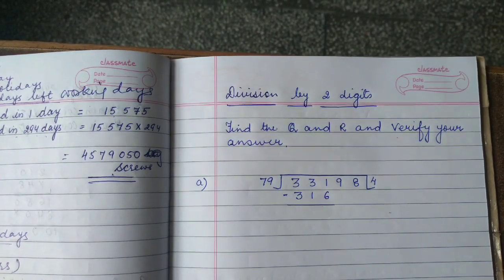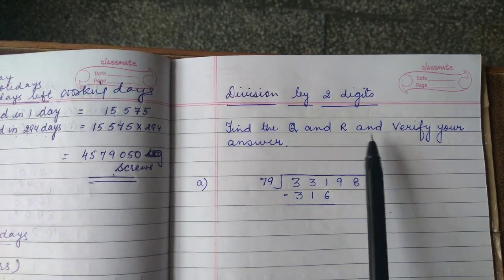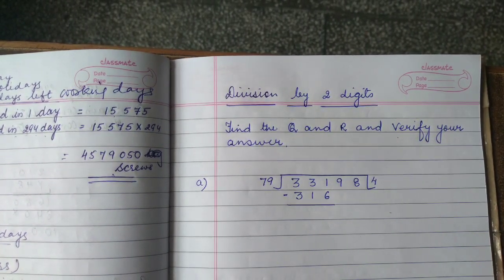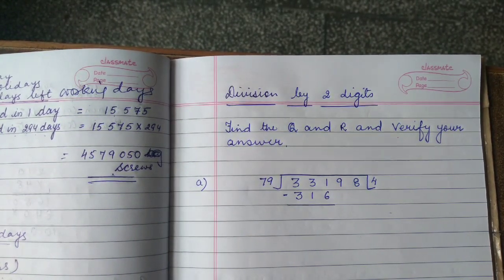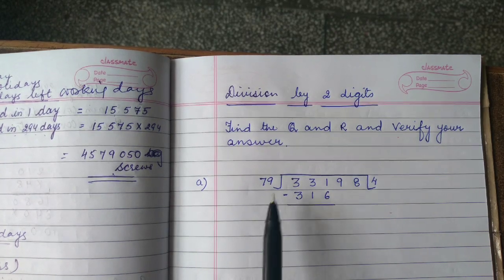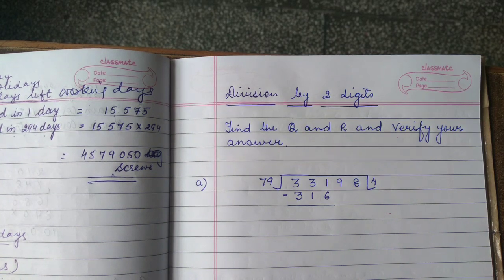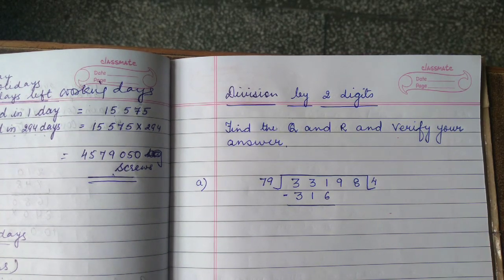This is our first question. You have to find the quotient and remainder, and after that you have to verify the answer. You have done this exercise in Class 4 also. So just see how to do this question. The divisor is 79, so first of all write the table of 79 on the side of the notebook.